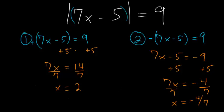And with each of these, we can check our answer. So if we plug a 2 in here for x, 7 times 2 is 14, minus 5 is 9. The absolute value bars don't change it, so we know that this one is indeed correct.